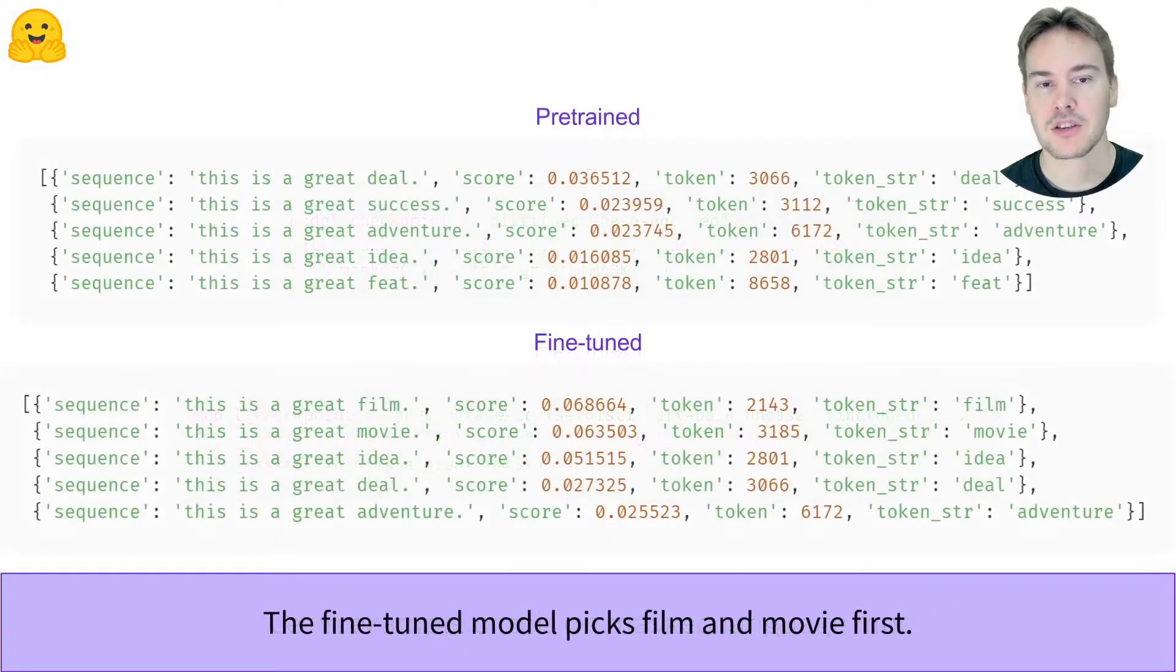The pre-trained model makes generic predictions, whereas the fine-tuned model has its first two predictions linked to cinema. Since it was fine-tuned on a movie reviews dataset, it's perfectly normal to see it adapt its suggestions like this. Notice how it keeps the same prediction as the pre-trained model after a while.